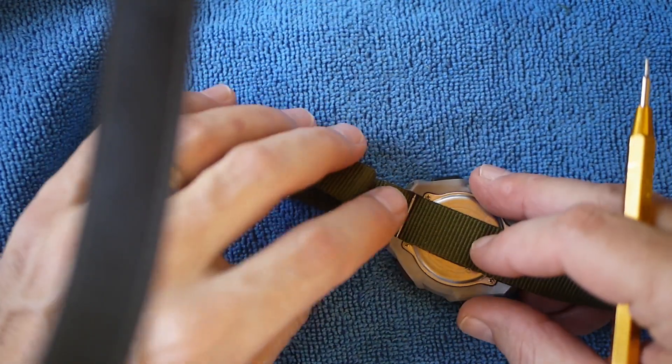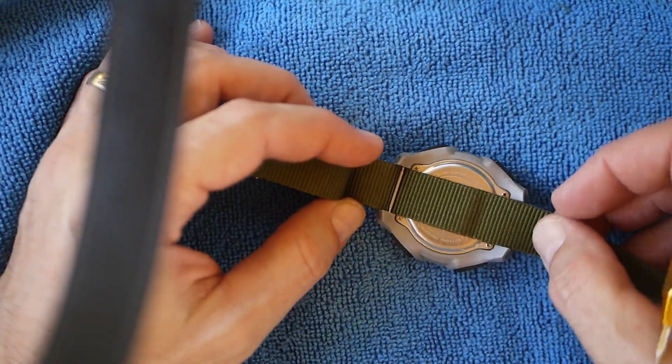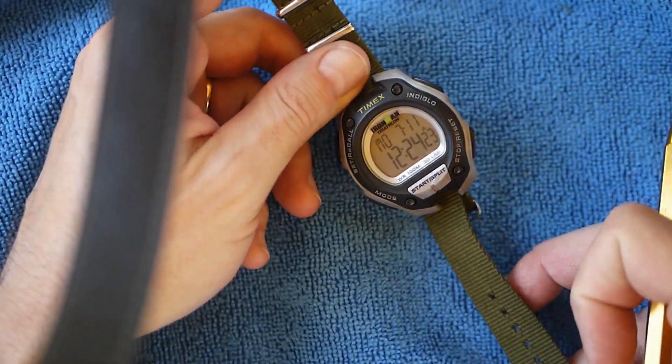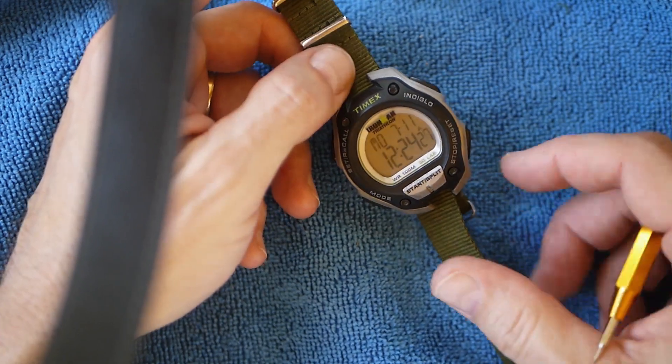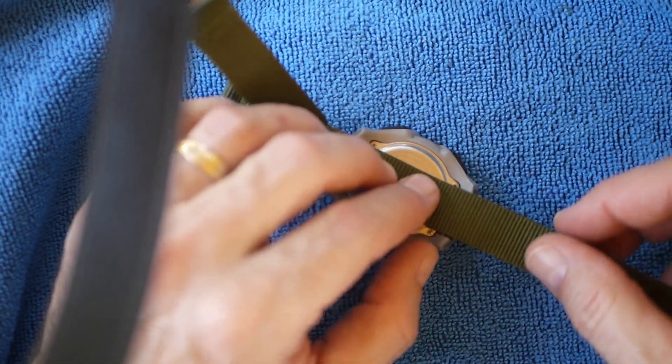So I went ahead and I dug the spring bars out. I already got this one in on this side. I've just got this cheapo NATO band I got off of Amazon. I'll leave a link in that description to show you guys. But I just wanted to show you how easy this is.